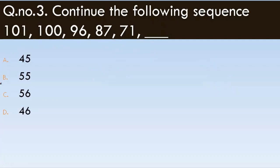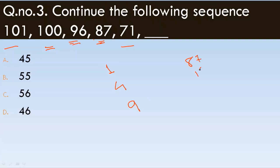Next sequence: 101, 100, 96, 87, 71. Finding the differences: 101 minus 100 is 1, 100 minus 96 is 4, 96 minus 87 is 9, 87 minus 71 is 16. The differences are 1, 4, 9, 16.